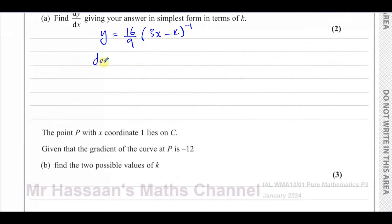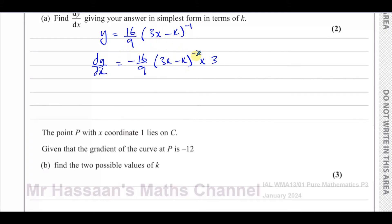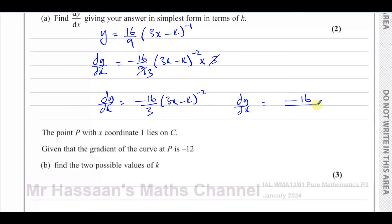So dy/dx is going to be: multiplying by the power gives negative 16 over 9, and taking 1 from the power gives negative 2. Then you have to multiply by the differential of what's inside the function — don't forget the chain rule. If you differentiate 3x minus k, where k is a constant, you get 3. This 3 and the 9 cancel, leaving dy/dx equal to minus 16 over 3 times (3x minus k) to the power of negative 2, or equivalently minus 16 over [3(3x minus k)²].